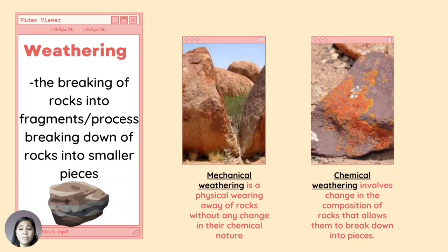Weathering can either be mechanical or chemical. Mechanical weathering is a physical wearing away of rocks without any change in their chemical nature. While chemical weathering involves change in the composition of rocks that allow them to break down into pieces.